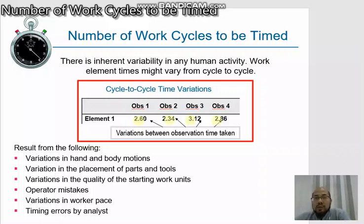2.6, 2.34, 3.12, and 2.86. These variations might result from the following: variation in hand and body motions, variation in the placement of parts and tools, variation in the quality of the starting work units. The variation also might come from operating mistakes, variation in worker pace, and timing error by the analyst.